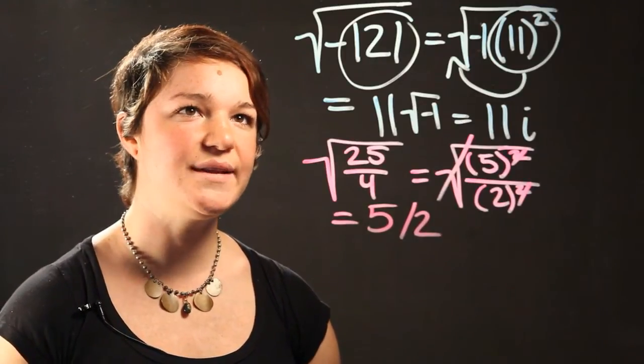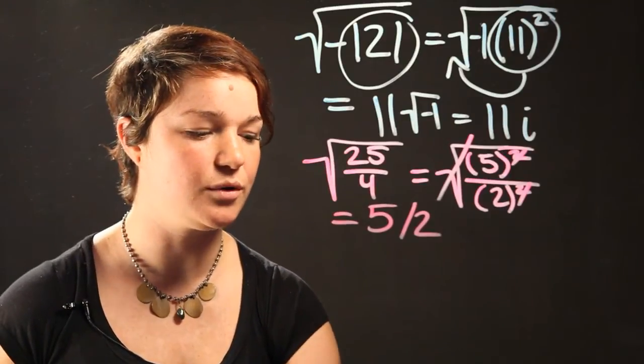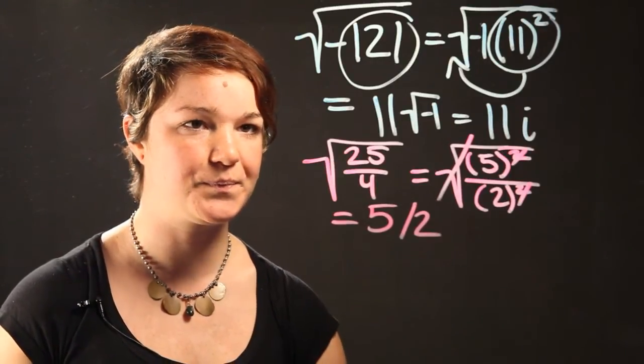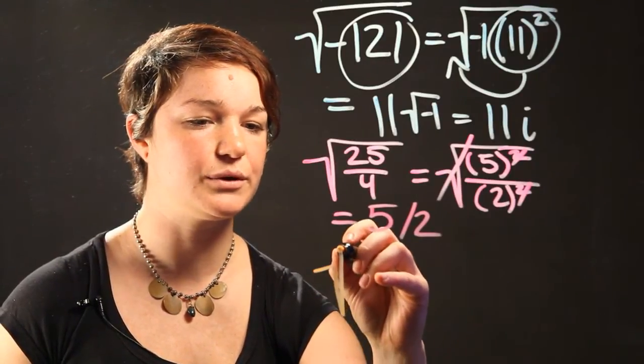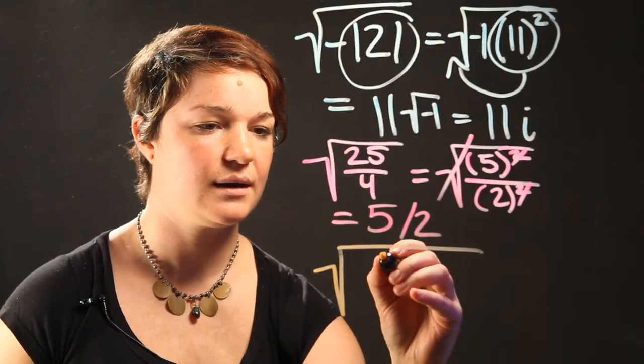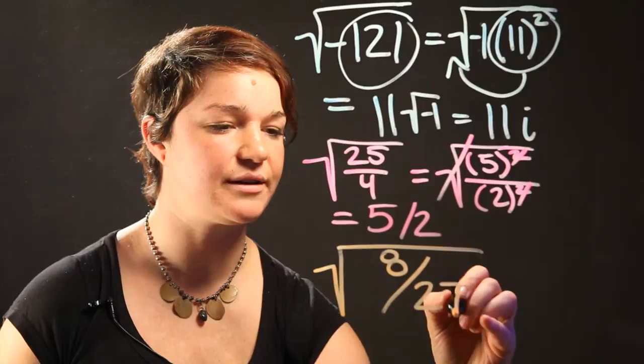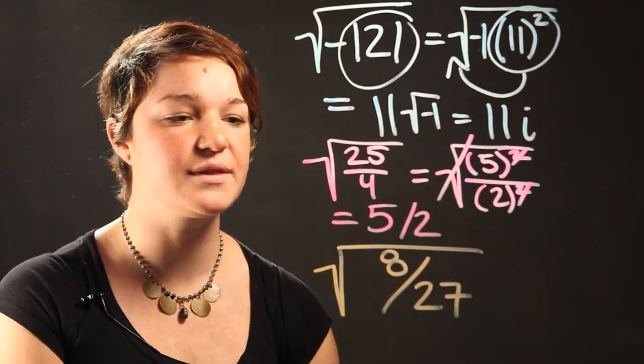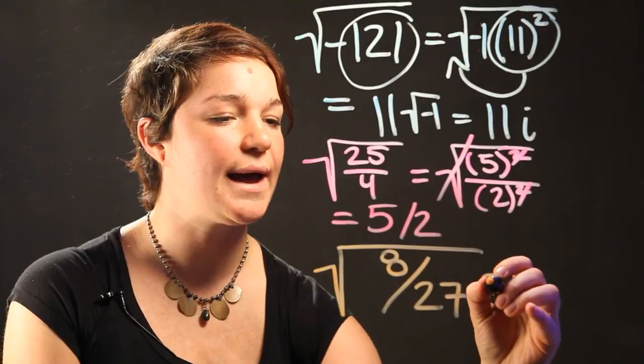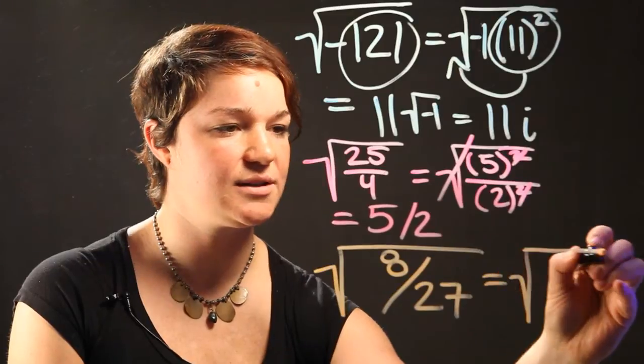And what we're going to do is we're going to do an example with a cubic root. Here, our example is going to be the cubic root of 8 divided by 27. Once again, as before, we're going to convert this into a way that's easier to look at, so we can see what we can simplify it to.